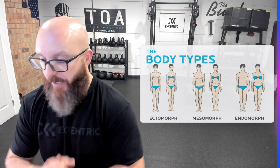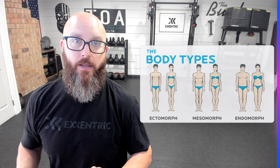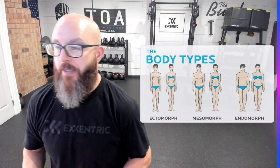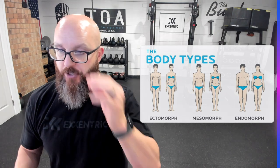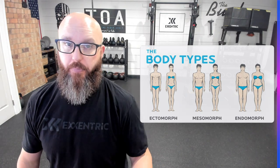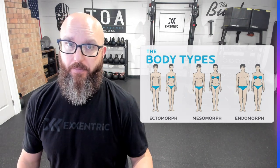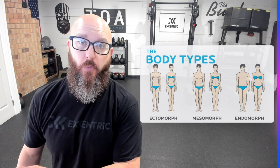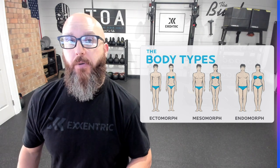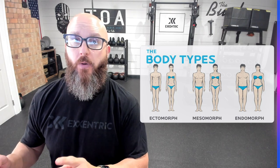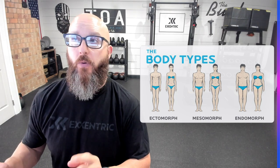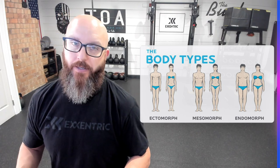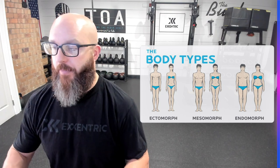Let's dive into body types. Typically in almost every resource — and I'm going to show you about five of them — within each of these resources you are going to pretty much see the same thing: ectomorph, mesomorph, endomorph, and then combos of endo-meso, ecto-meso, ecto-endo, et cetera. That's where some of the lines start to get a little blurred.